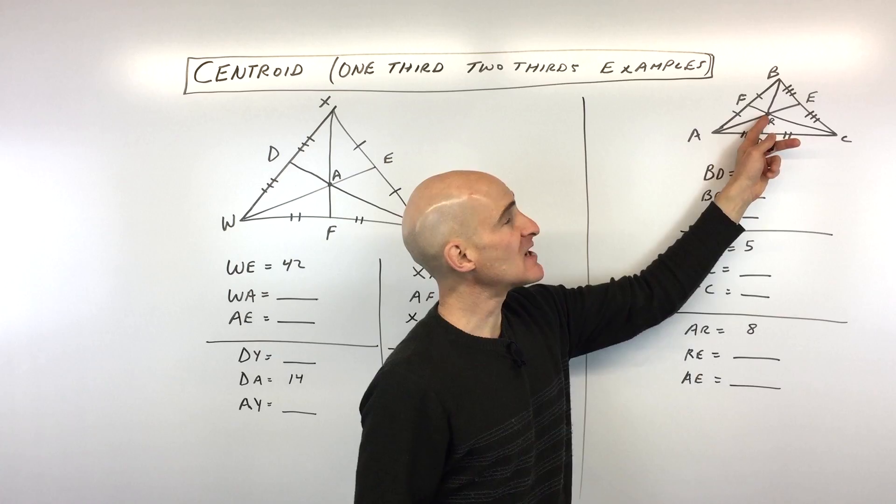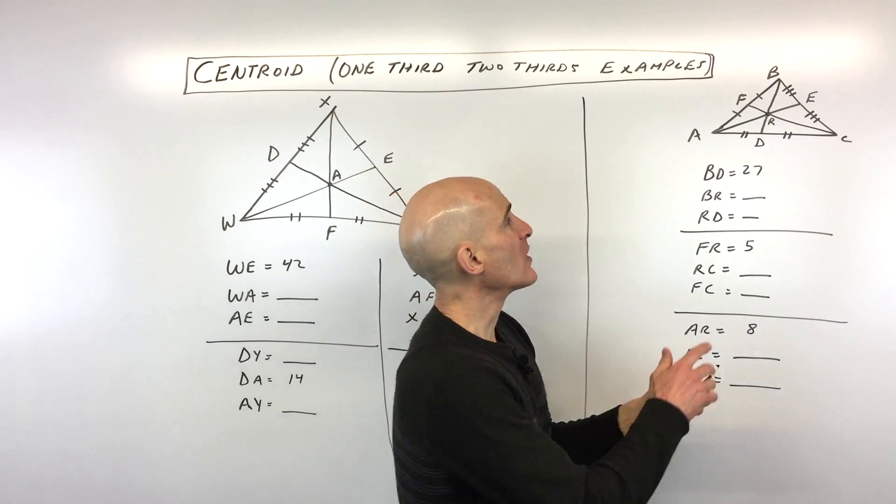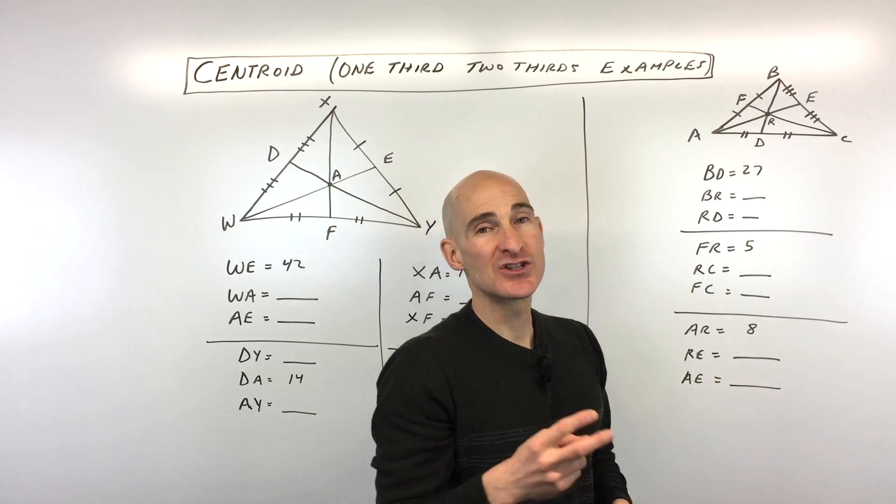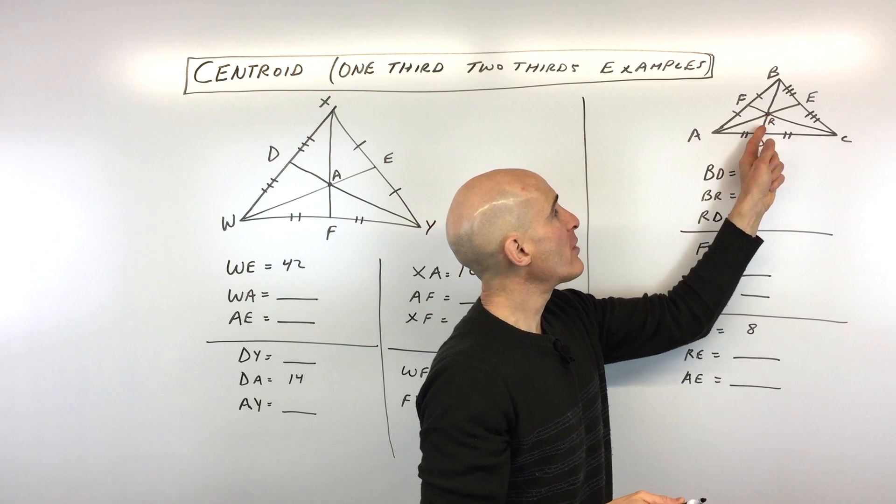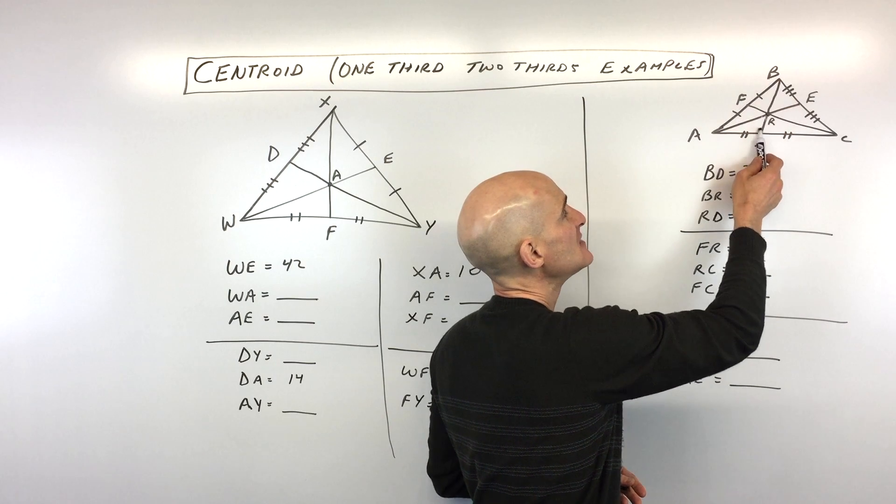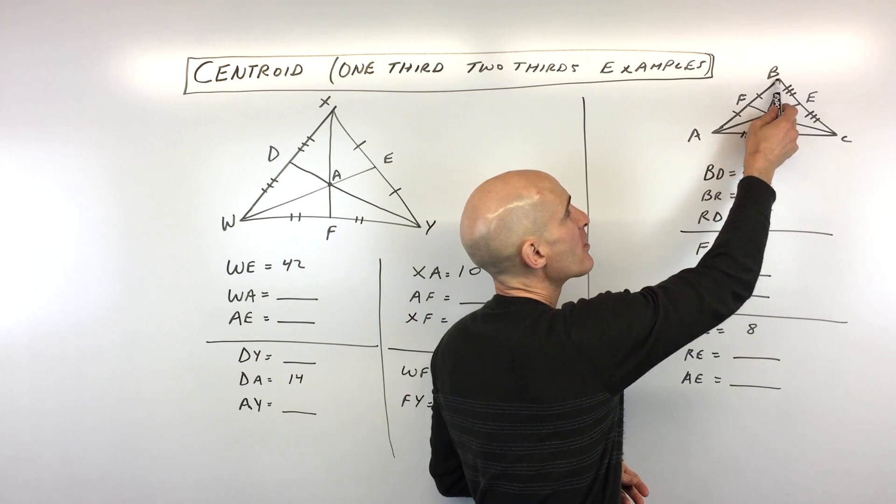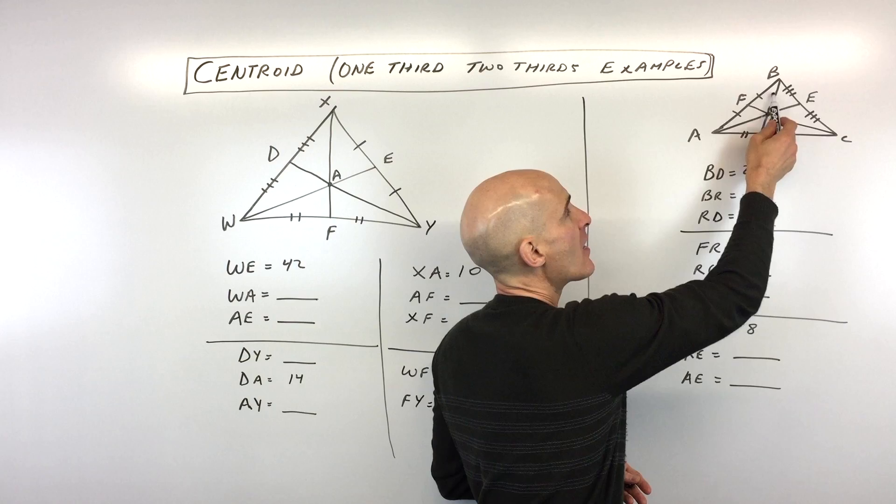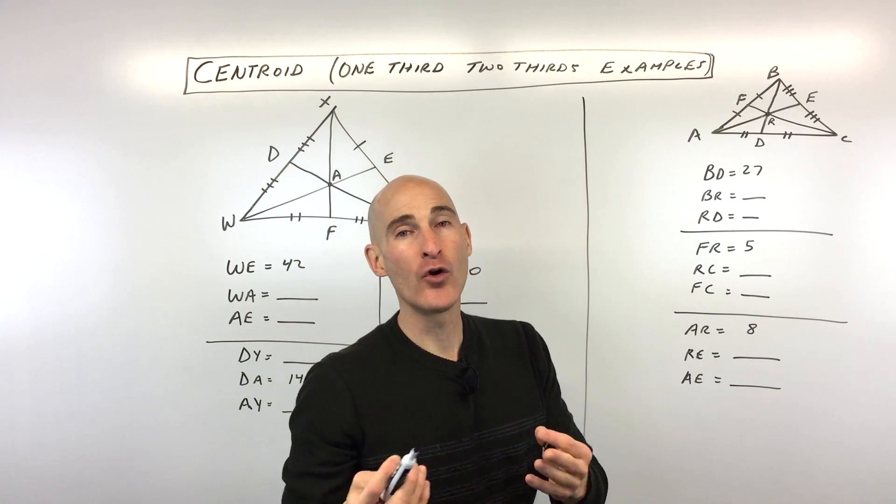But what's interesting about this centroid is that each median is split into two parts, one-third and two-thirds. So what I mean by that is you can see this whole length here BD. RD would be one-third of the median length. BR would be two-thirds of that whole median length.